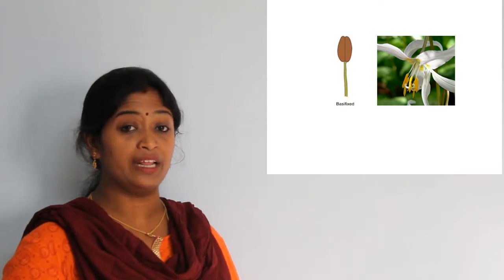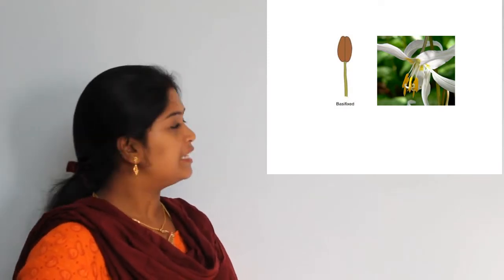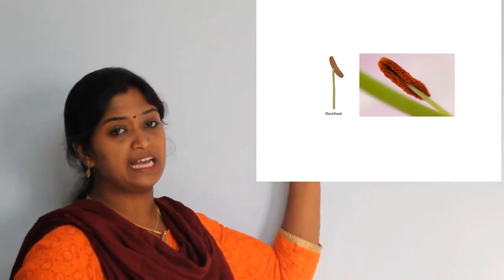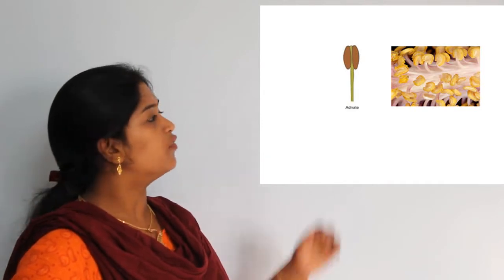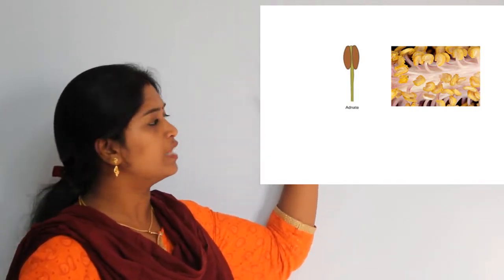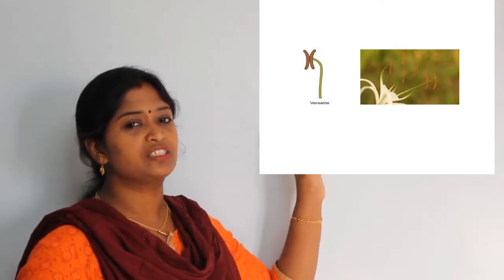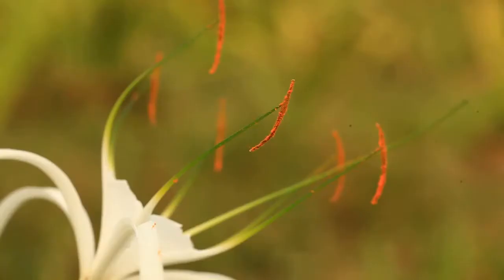Based on the fixation of the filament to the anther, there are different types of anther. The first is the basifixed anther, where the filament is attached to the base of the anther. Next is the dorsifixed anther, where the filament is attached to the dorsal side. Then there is the adnate anther, where the filament is attached all along the length of the anther lobes. Finally, the versatile anther is a disc-like structure attached to the filament, mainly seen in anemophilous flowers where pollination takes place with the help of wind, allowing the pollen to be carried by wind.